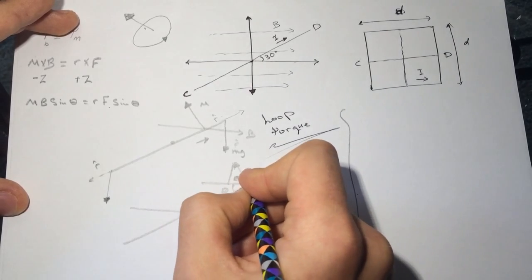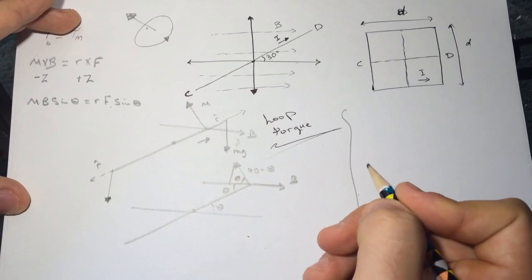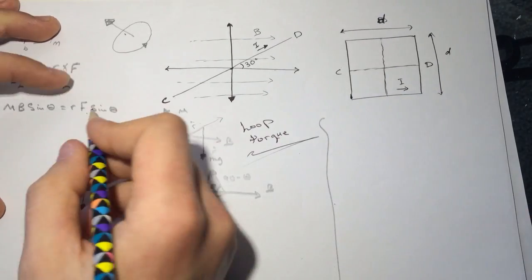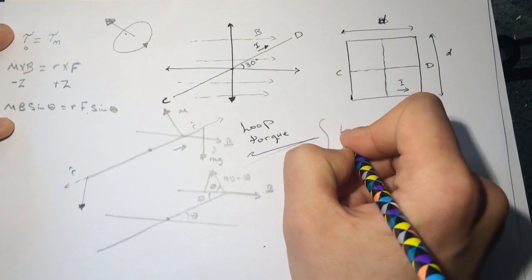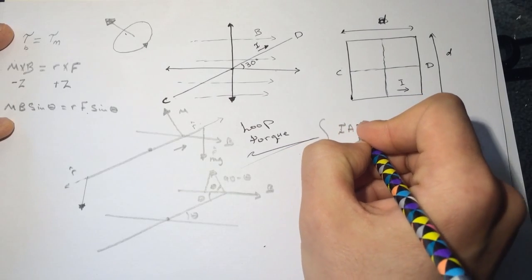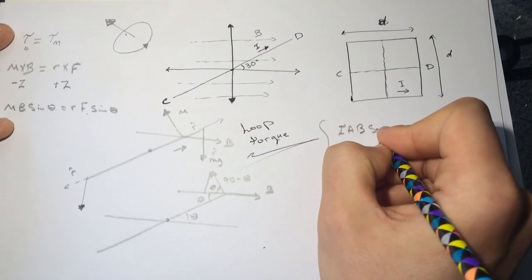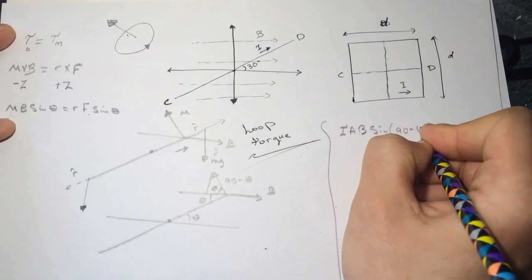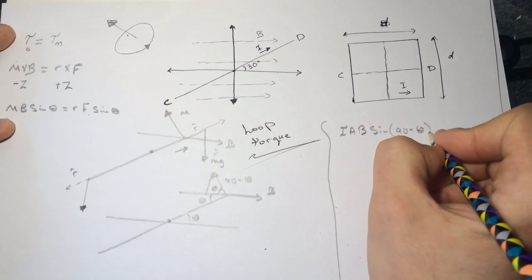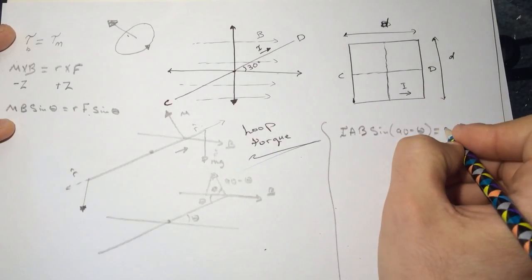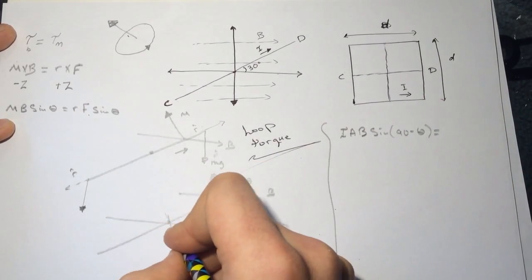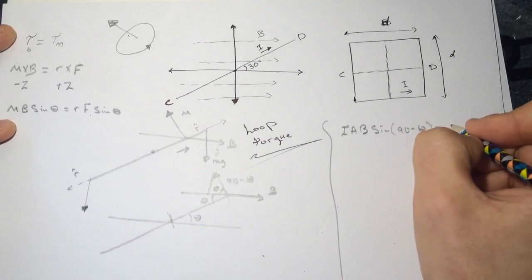We're looking for the dipole moment, which is μ = IA. So it's I times A times B times sine of 90 minus theta. And the R is just - if we said that the whole thing is d, this is d over 2, and the force is just mg.